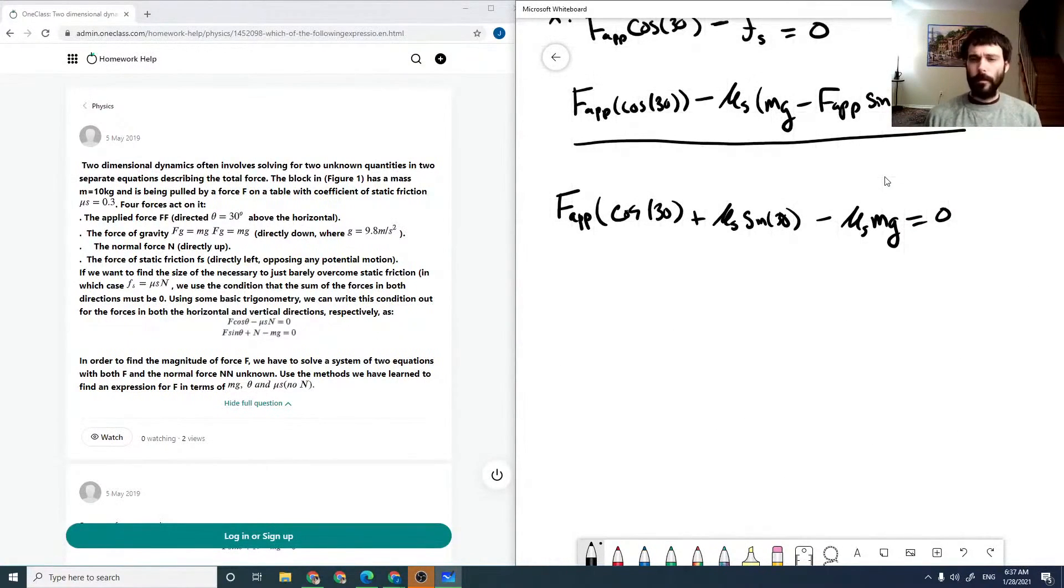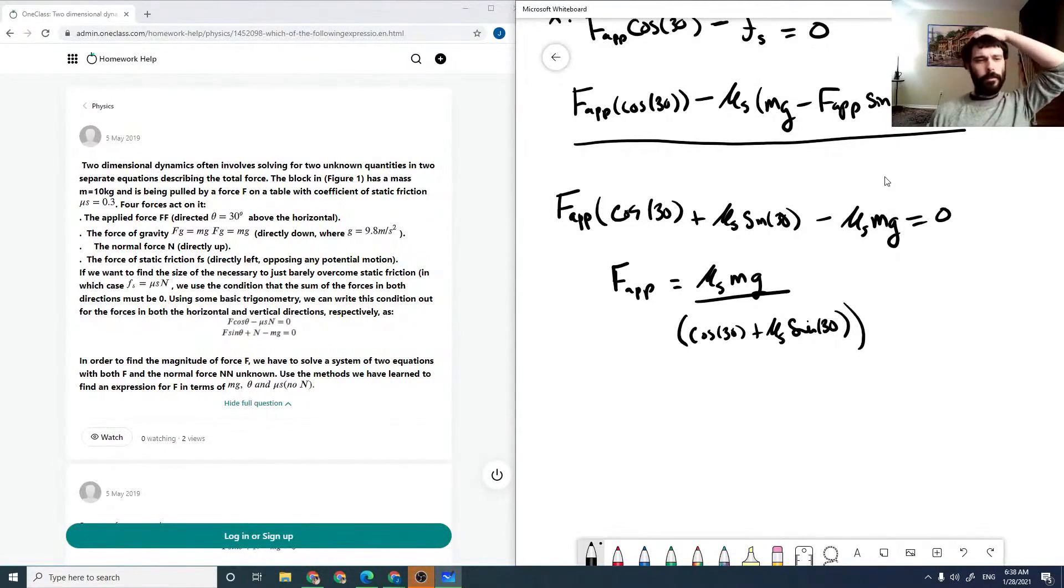...minus mu_s times mg equals zero. So rearranging, we've got our applied force in the denominator with cosine of 30 plus mu_s sine 30. And now we have actually all those values, so I guess we might as well solve for what our applied force is.